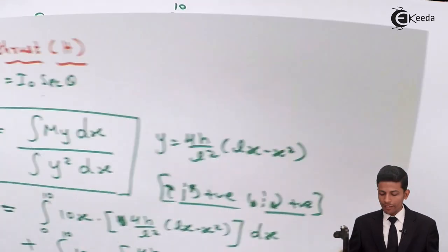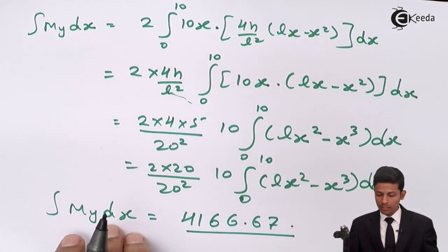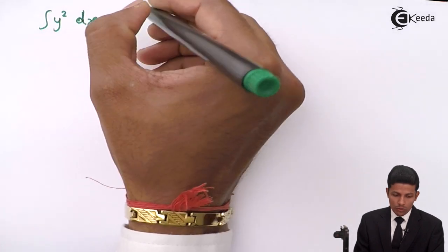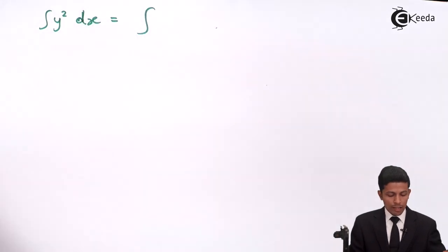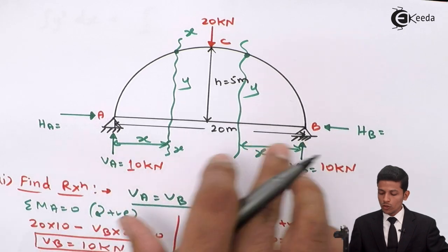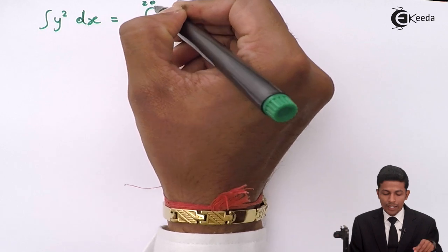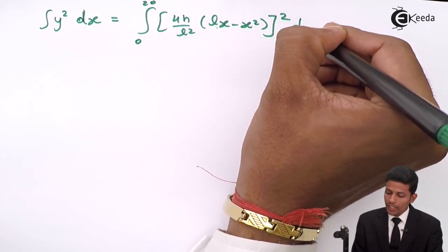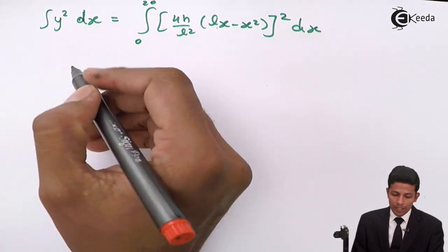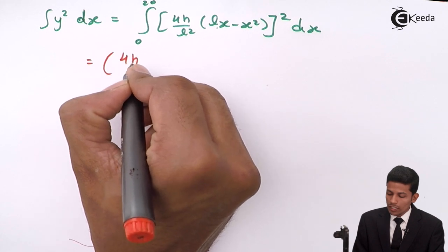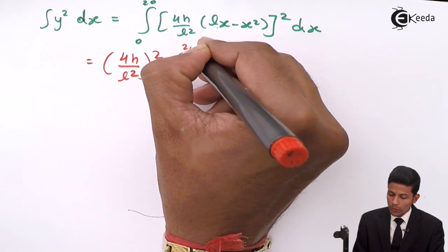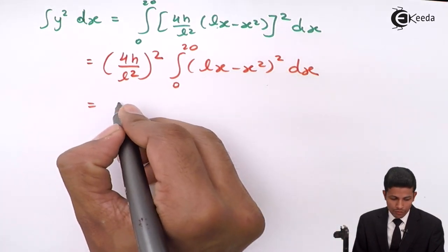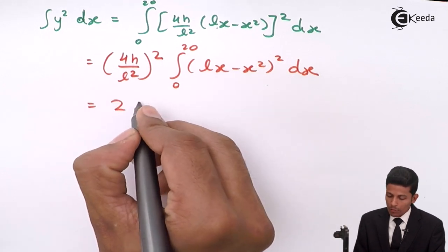Now let's find the integration of Y²·dX. For Y² always integrate over the full length from 0 to L, that is 0 to 20. Y² dX equals ∫₀²⁰ [(4H/L²)·(L·X − X²)]² dX. Taking constants outside: (4H/L²)² · ∫₀²⁰ (L·X − X²)² dX. Solving this gives 266.67.